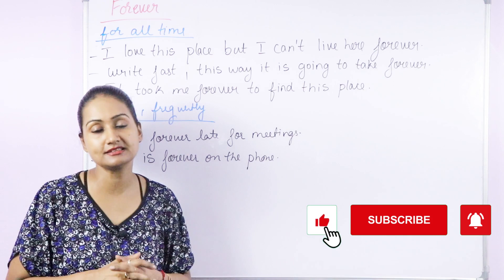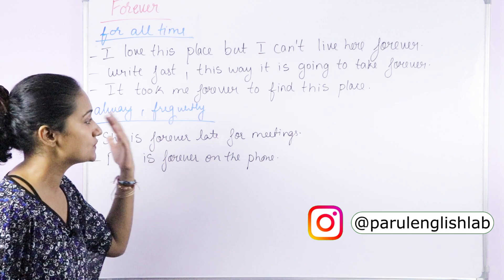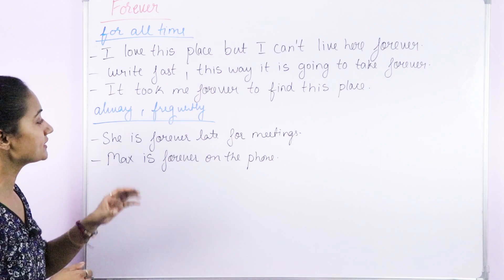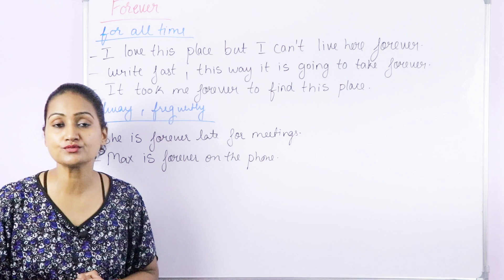The second meaning of forever is always, frequently, or often. For example: She is forever late for meetings — that means she is always late for meetings. Max is forever on the phone — he doesn't have time; he is always on the phone. So always, frequently, and often can be replaced by forever in this usage.